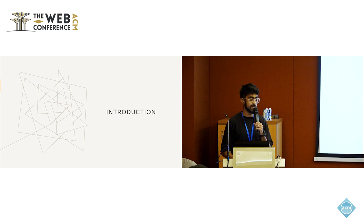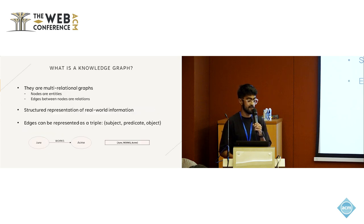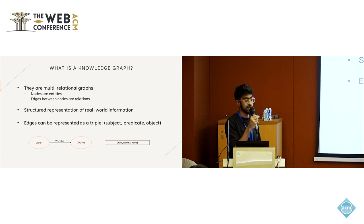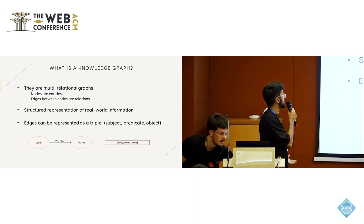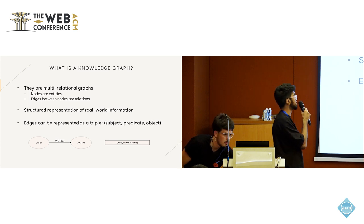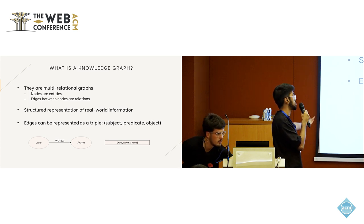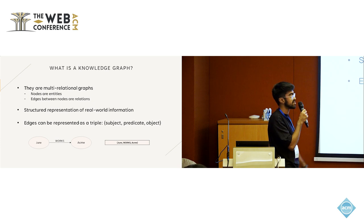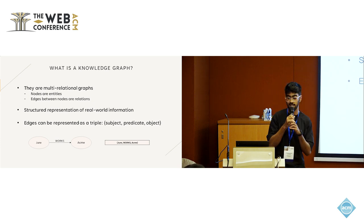To get started, let's first talk about what a knowledge graph is. Knowledge graphs are multi-relational graphs, also structured representations of real-world information, where the nodes are entities and the edges between these nodes are termed as relations. Edges in a knowledge graph can also be represented in the form of a triple — subject, predicate, and object. Below is an example where June is the subject, the predicate is 'works', and the object is Acme.